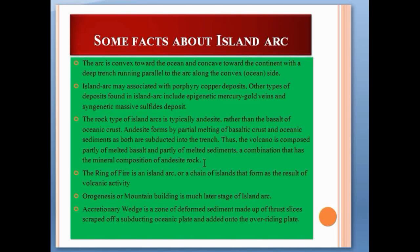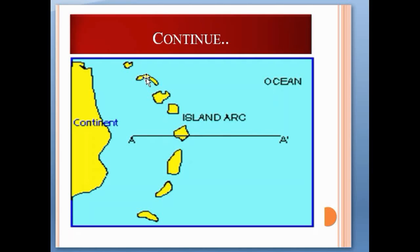The Ring of Fire is an island arc, or a chain of islands that forms as the result of volcanic activities. Orogenesis, or mountain building, is a much later stage of island arc. An accretionary wedge is a zone of deformed sediments made up of thrust slices scraped off a subducting oceanic plate and added onto the overriding plate.